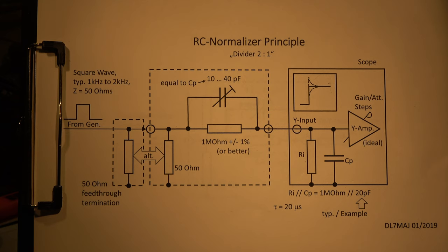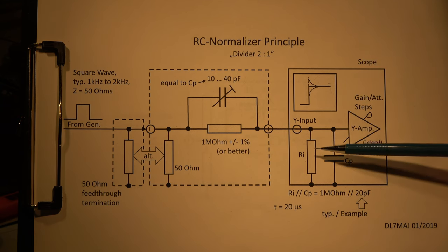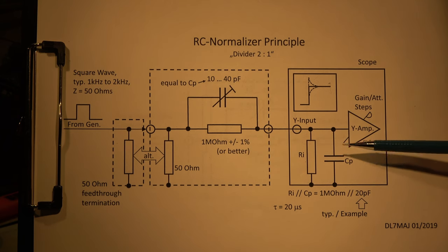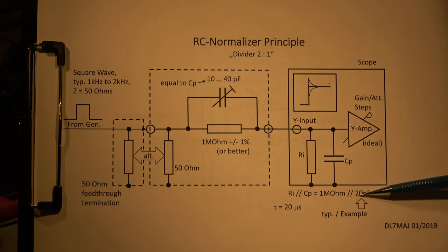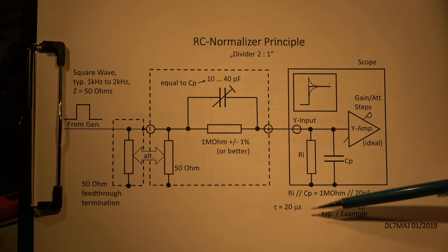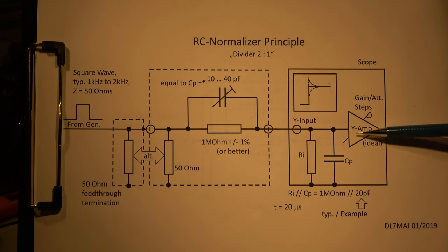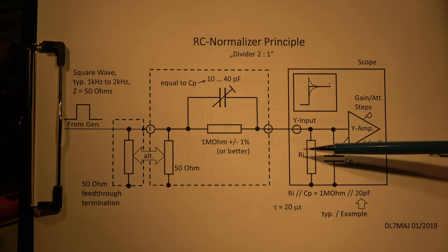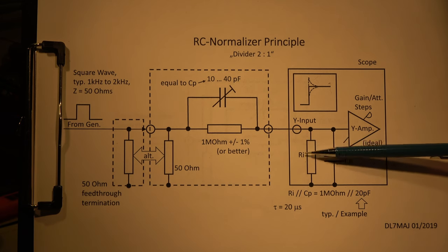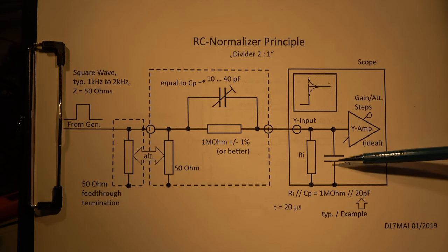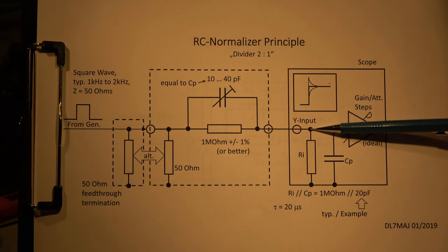How does such a normalizer work? What's the principle? We have here an oscilloscope input circuit. Typically we have an input resistance of one megaohm and a parallel capacitance - let's assume 20 picofarad, maybe 25 or 30 picofarad depending upon the scope. This is the equivalent circuit of the input, and here is a gain with the steps - 10, 20, 50 millivolt and so on - where the steps are adjusted. This amplifier is assumed ideal and the components represent the actual input resistance R and parallel capacitance.